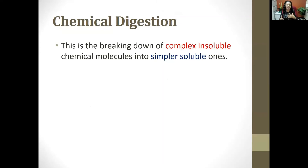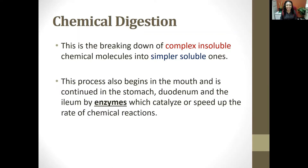Chemical digestion is where we move from complex and insoluble to simple and soluble — a chemical change is now taking place. If you chew a dumpling and bring it back up, it still looks like dumpling unless it has started undergoing chemical change due to enzymes in the body. Chemical digestion, like mechanical digestion, begins in the mouth and continues in the stomach, duodenum, and ileum, all carried out by enzymes that catalyze or speed up the rate of a chemical reaction.